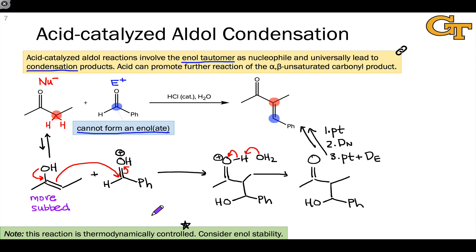The important point is that elimination is unstoppable once we reach the aldol addition product under acid-catalyzed conditions. So universally, we get the condensation product when we run an aldol reaction under acid-catalyzed conditions. And since the reaction is thermodynamically controlled, the more substituted enol intermediate will be involved, and we'll end up with the more substituted alpha-beta unsaturated ketone product.